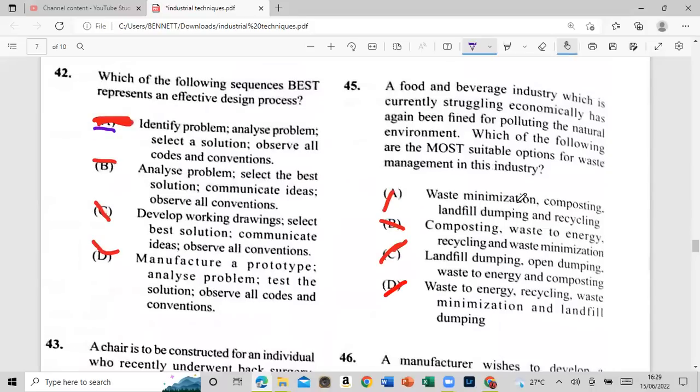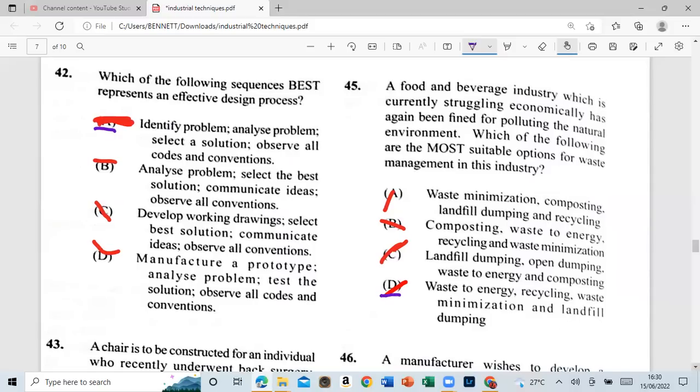A food and beverage industry which is currently struggling with the economical environment. In this position, composting, landfill, dumping, and recycling. B: composting, waste to energy, recycling, and waste minimization. B: landfill dumping, open dumping, waste energy, and B: composting. Or is it D: waste to energy, recycling, waste minimization, and landfill dumping? And that is D, for the five days B, as in dog. All right. So let's move on to 46.